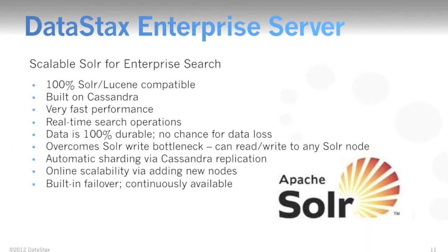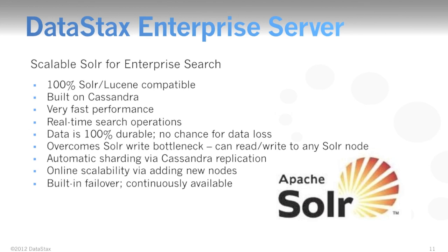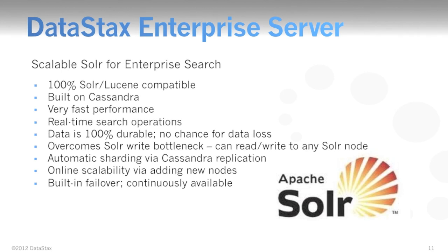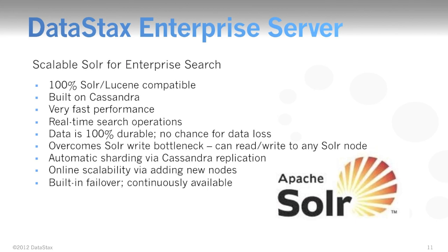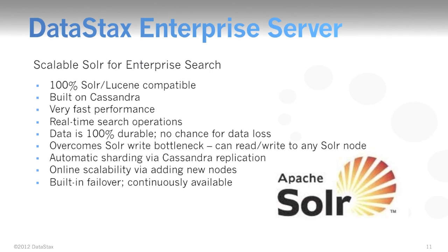DataStax Enterprise also contains strong enterprise search support via Lucene and Apache Solr. Solr's primary features include robust full-text search, hit-highlighting, faceted search, rich document handling — PDF, Microsoft Word — and geospatial search. By integrating Solr into the DataStax Enterprise big data platform, DataStax extends Solr's capabilities and overcomes a number of its shortcomings. For example, there is no chance for data loss as in native Solr. DataStax Enterprise overcomes Solr's write bottleneck because search data can be written to any search node. Replication and sharding of Solr — usually a manual process requiring careful planning — is handled automatically in DataStax Enterprise.